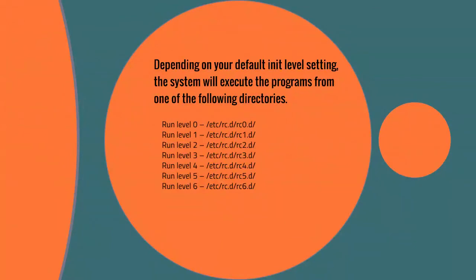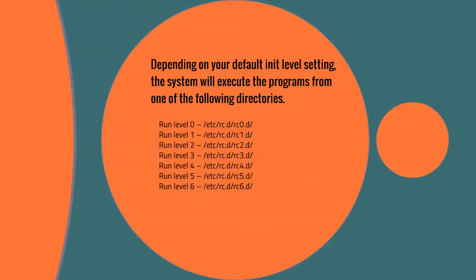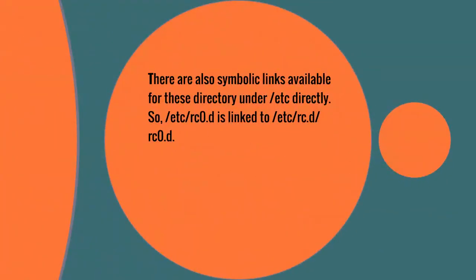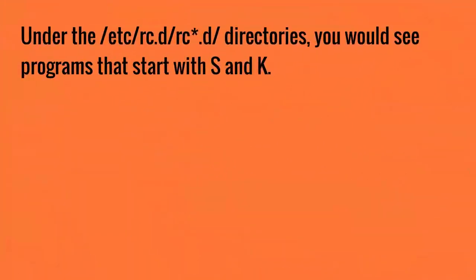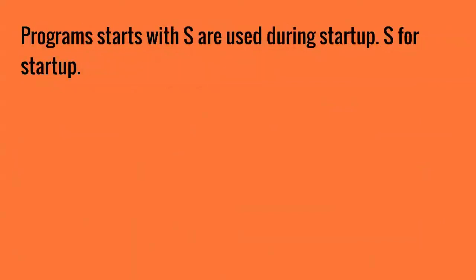Depending on your default init level settings, the system will execute programs from one of the run level directories. Note that there are also symbolic links available to these directories under /etc directly — for example, /etc/rc0.d is linked to /etc/rc.d/rc0.d. Under the /etc/rc.d/rc*.d directories, you would see programs that start with S and K.